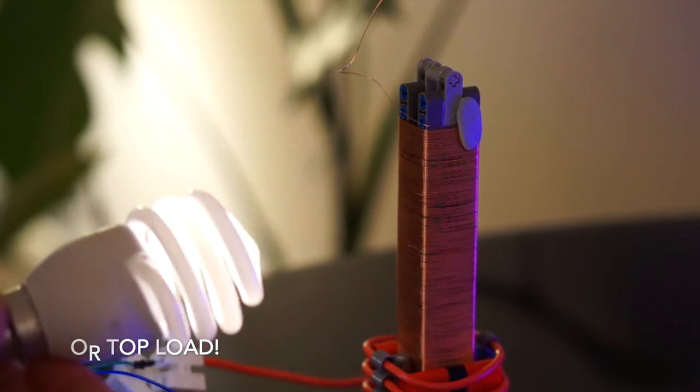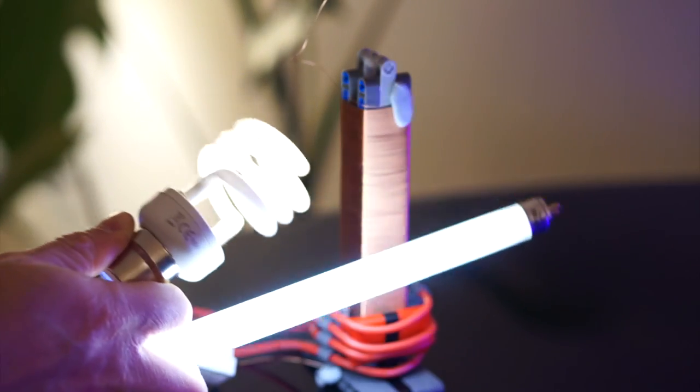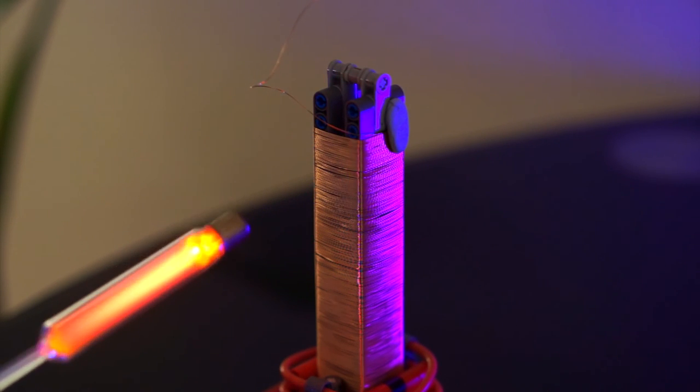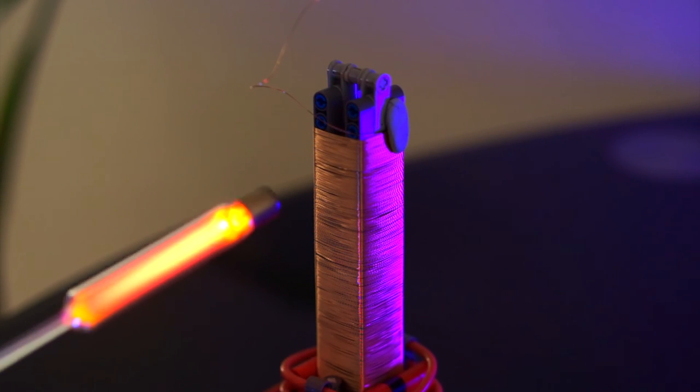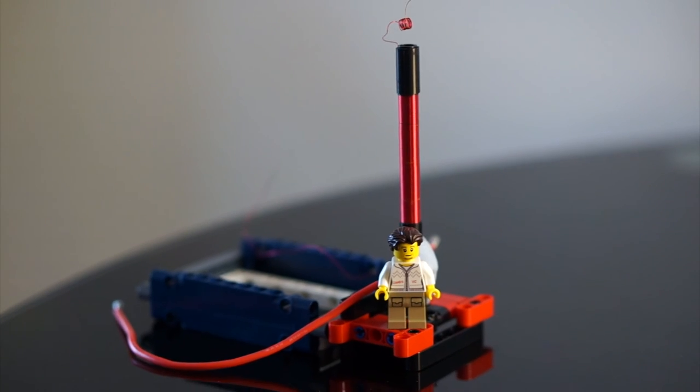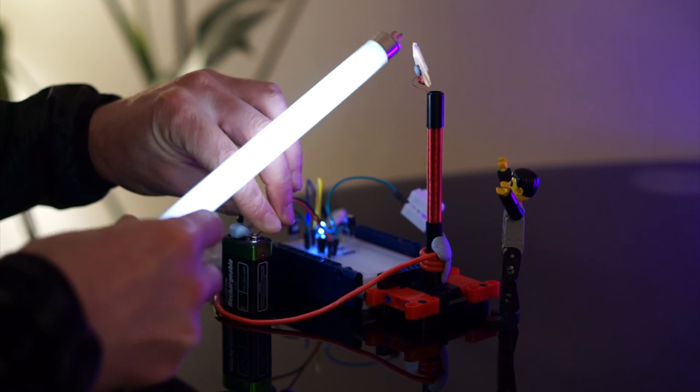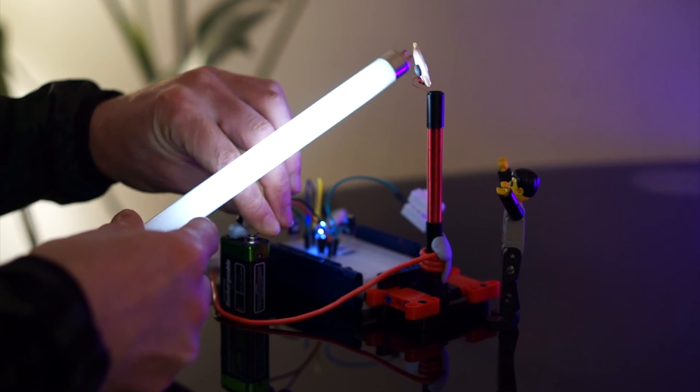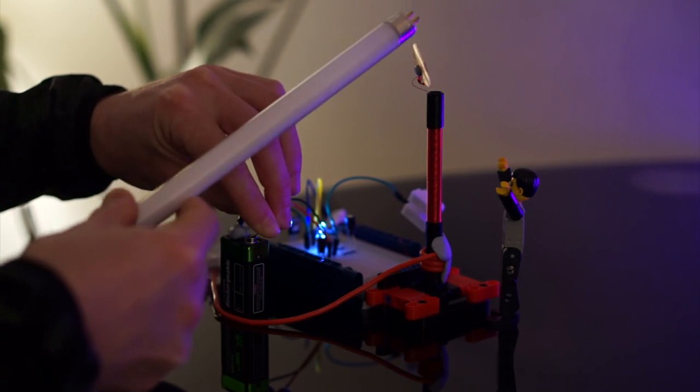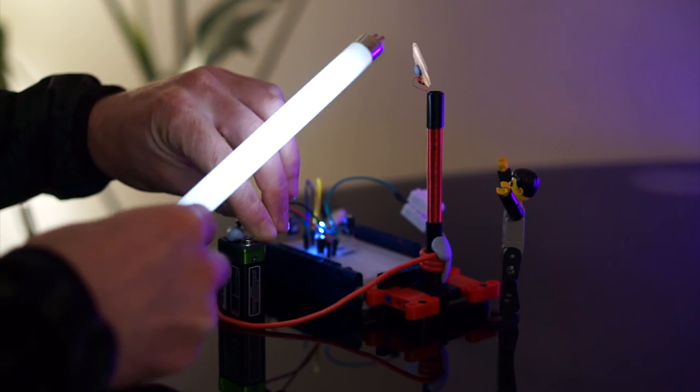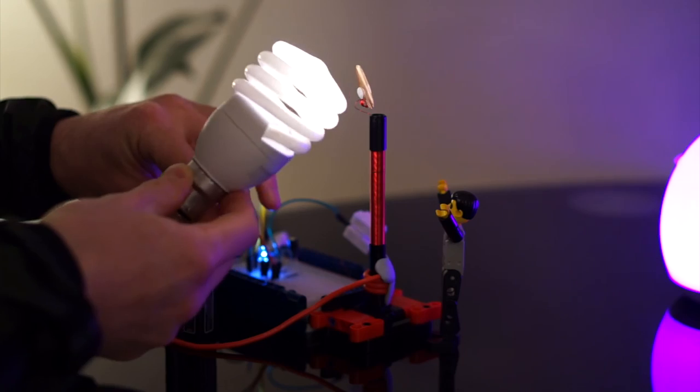And now as an extreme example of scaling down, here's a coil I made using those small pin connectors. Once again, I have to bring the bulb a little closer to the coil, but it does still work. That's pretty amazing that something so small and made out of mostly LEGO can produce wireless energy.